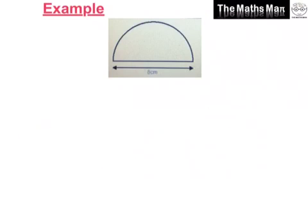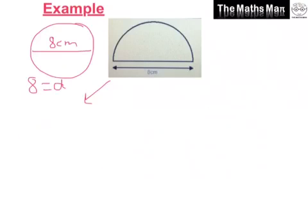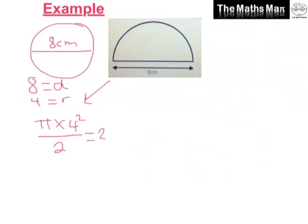Here's an example. First of all let's work out the area. The distance on the diagram tells us it's eight centimeters, so eight equals the diameter, therefore four equals the radius. Now to work out the area of this circle we're going to do pi times four squared, but we want the area of the semicircle so we need to divide this all by two. That gives us 25.132, which we can round to 25.1 centimeters squared.